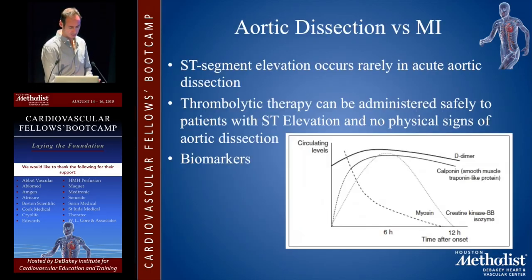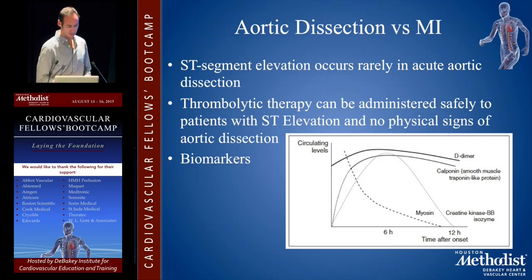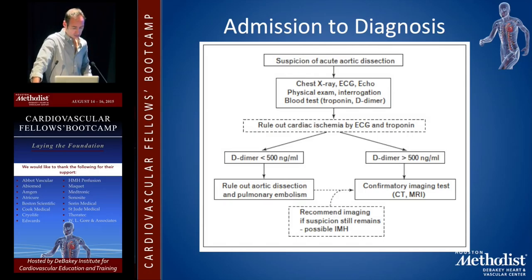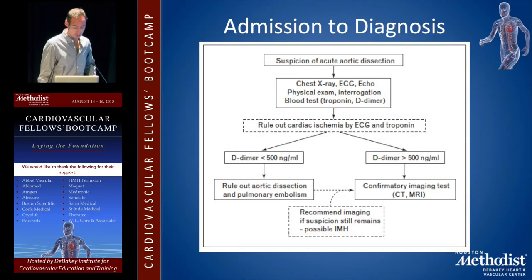For differentiating aortic dissection versus MI: ST segment elevation occurs rarely in acute aortic dissection but can occur, so you need to consider MI if that's the presentation. Thrombolytic therapy can be administered safely in patients with ST elevation and no physical signs of aortic dissection. Biomarkers are also useful — D-dimer can be pretty sensitive. If you have suspicion of acute aortic dissection, work up with chest x-ray, EKG, echo, physical exam, troponins, and D-dimer. Rule out cardiac ischemia with EKG and troponins. If D-dimer is less than 500, you can probably rule out acute aortic dissection; if greater than 500, a confirmatory test is needed as dissection is likely.